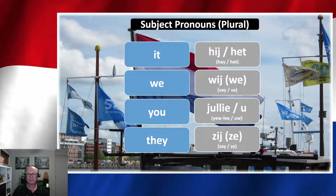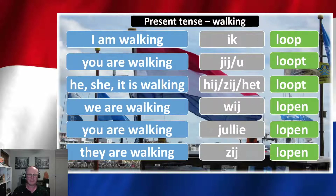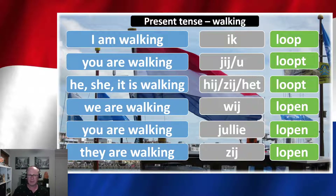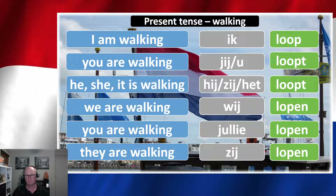So let's have a look at the rule in practice. Here we have the present tense version of 'to walk.' I am walking, you are walking, he/she/it is walking, we are walking, you are walking, and they are walking.